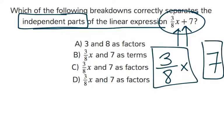Those are separate terms. The 7 is independent of the x, because if the x changes, it doesn't really affect the 7 term. So our answer here would just be 3 eighths x and 7 as terms.